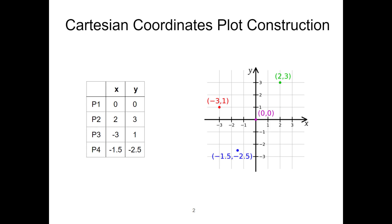Point is located on the origin. To identify point, we move two units to the right of the origin and three units upwards from the origin. Point is located three units to the left of the origin and one unit above the origin. Also, we can follow a similar process for identifying point 4.